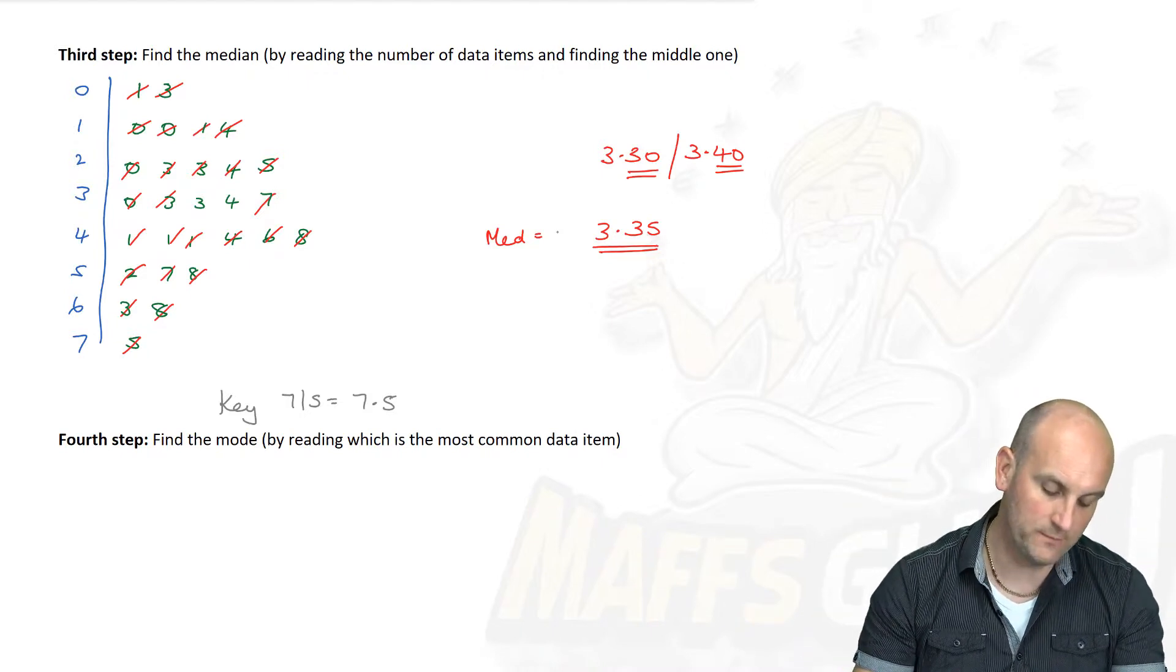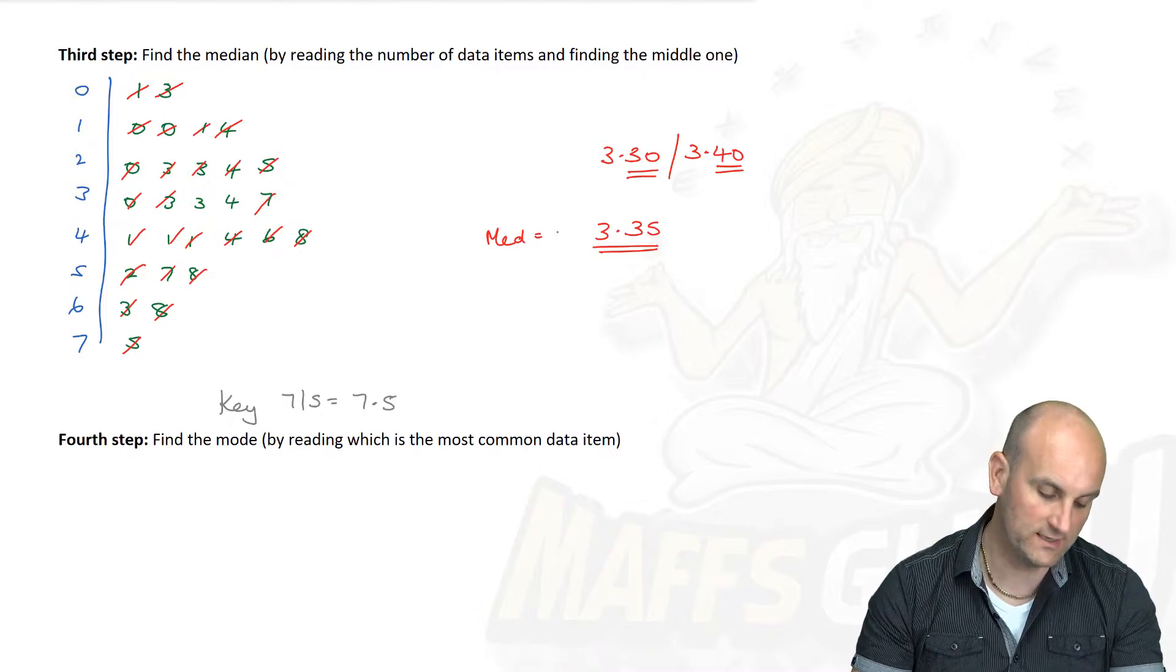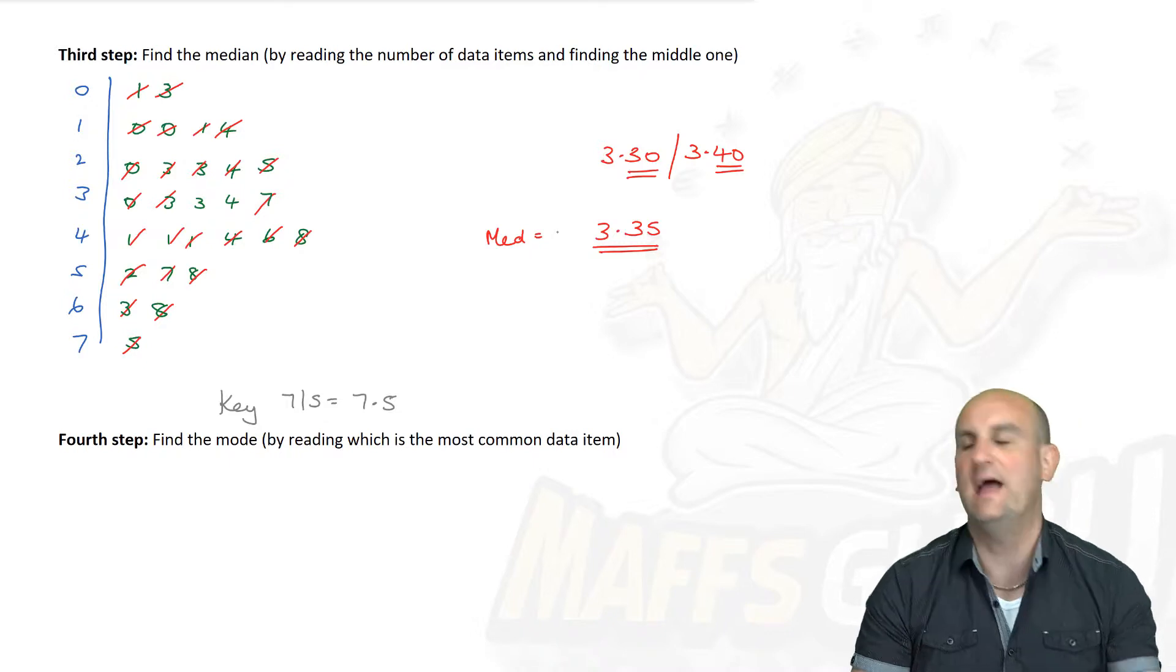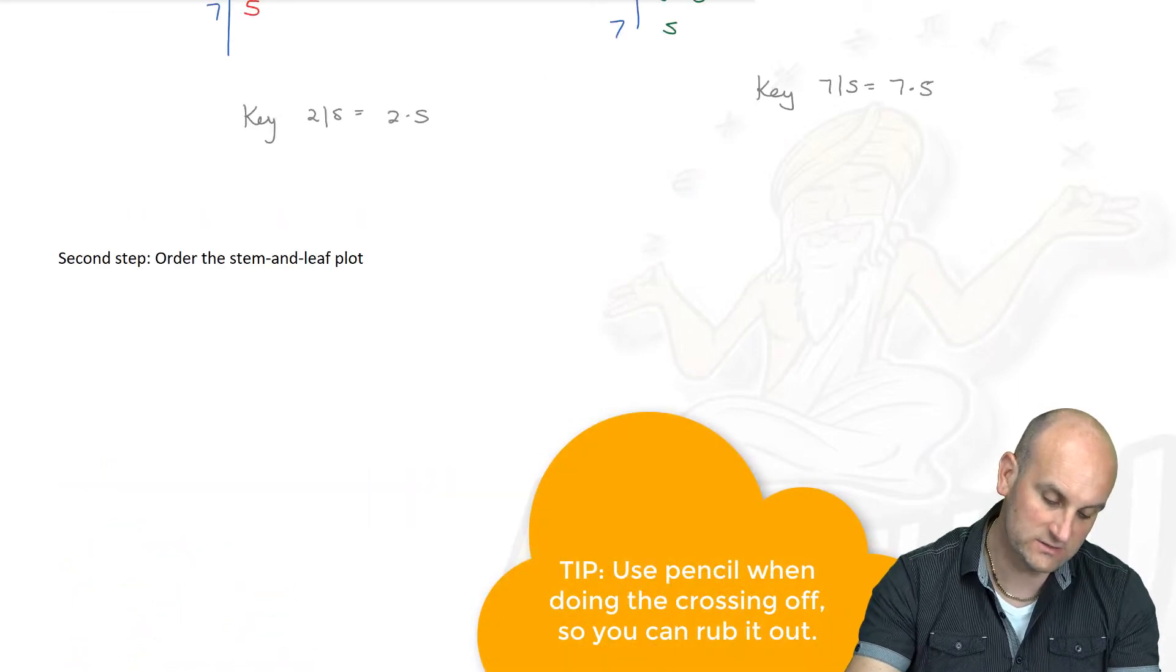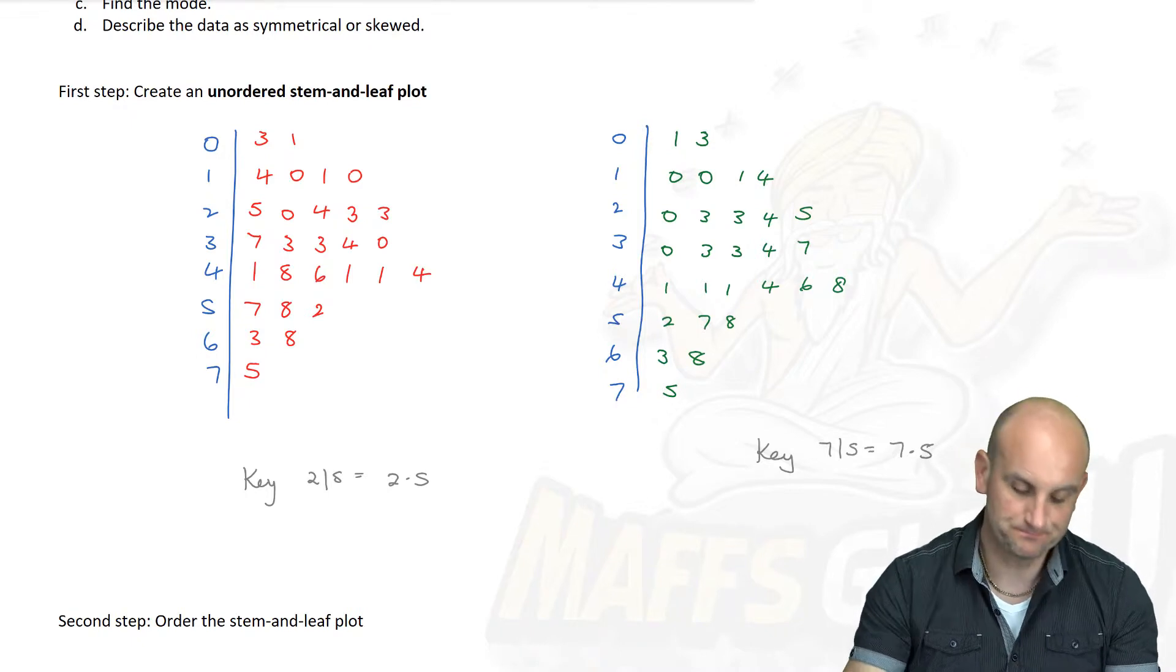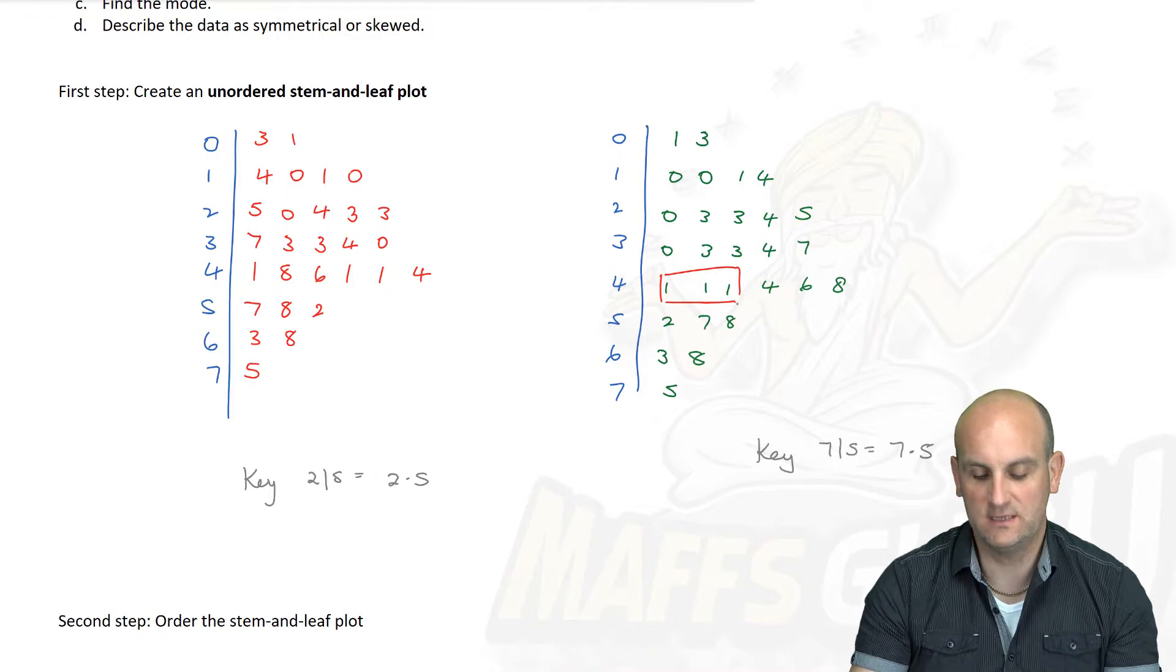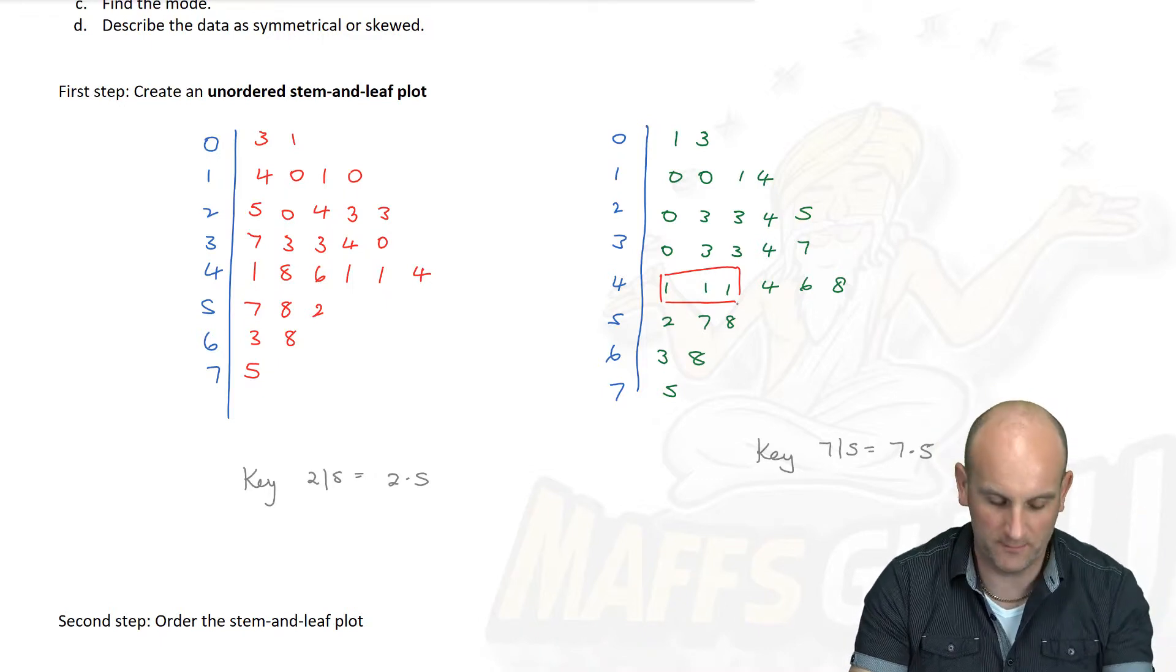The fourth step, find the mode by reading which is the most common data item. Looking at this, which appeared to be the most common data item? If we scroll up and have a look at the actual stem and leaf plot, which number do we see appearing the most? Hopefully you were noticing that we actually have three of those ones there. So one is my most important number or my mode.